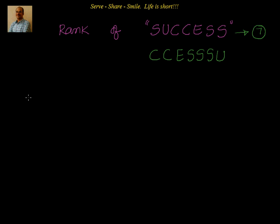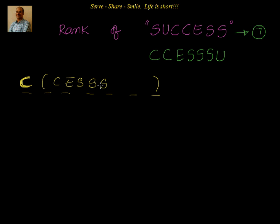There are seven slots total. For words starting with C, C is fixed, so six slots remain to be filled with the letters C, E, S, S, S, U. The number of ways to arrange these six letters is 6! divided by 3! (since S repeats three times). That gives 720 divided by 6, which equals 120 words starting with C.